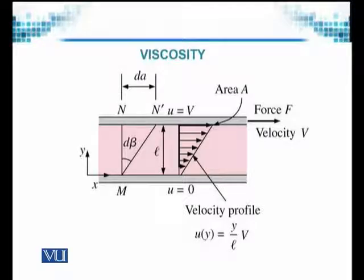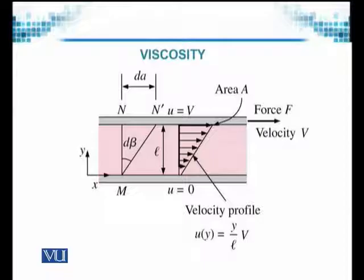The fluid's motion in the Y direction is also represented by angular motion — there is a change of a small angle D-beta. The velocity profile is represented by U(Y), which depends on Y, because as Y changes, the value of U also changes. So U is equal to (Y/L)·V.